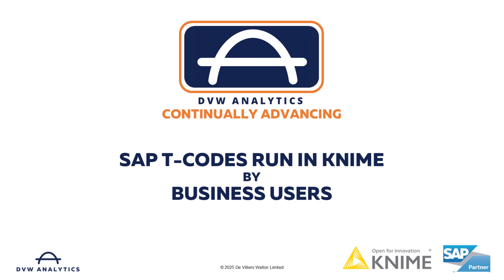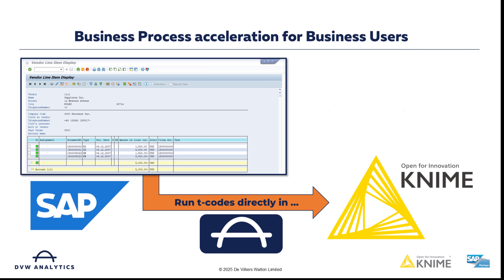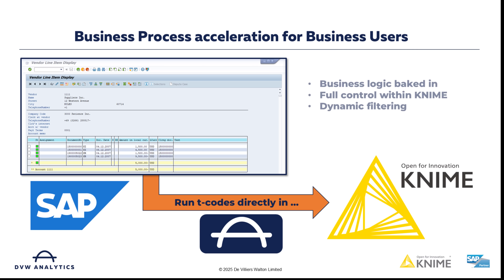Hello and welcome to this short video from DVW Analytics where I'll show you how anyone can run SAP T-Codes in KNIME. DVW Analytics provides native nodes within KNIME so that business users can embed SAP T-Code data directly within their KNIME workflows. That means that business logic built in SAP is baked into your KNIME business processes.